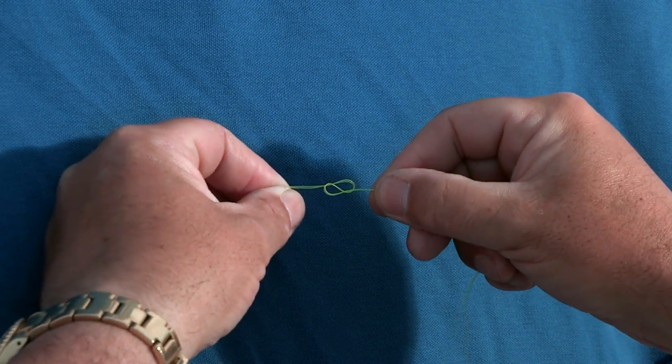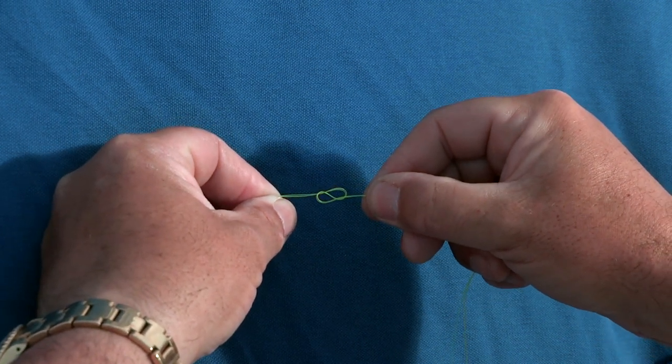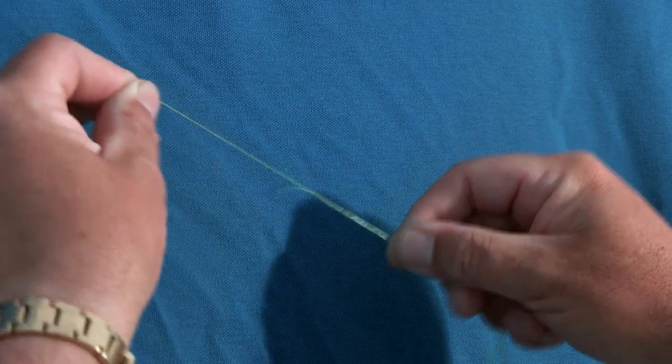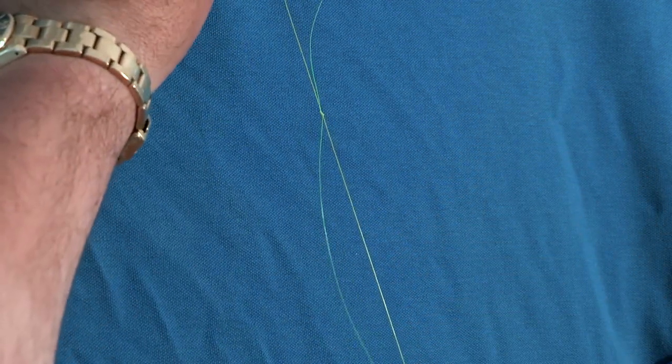Obviously wet it at this stage. If you get that figure-eight shape you know it's right, and just pull it tight, then cut your excess off.